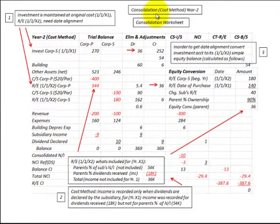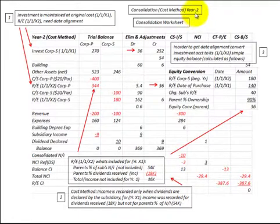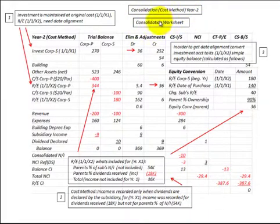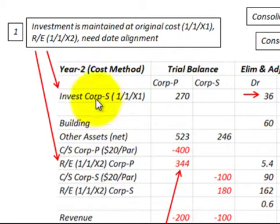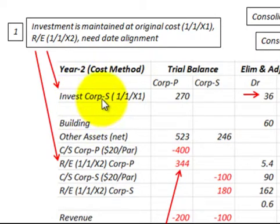Here we're going to be looking at the consolidation using a cost method for year two after the acquisition. This procedure could be used for any subsequent years like three, four, or five and so on. We're going to be using a consolidation worksheet. The first thing we have to do is align our investment account for the parent in the subsidiary corporation with the equity accounts for the parent and the subsidiary.